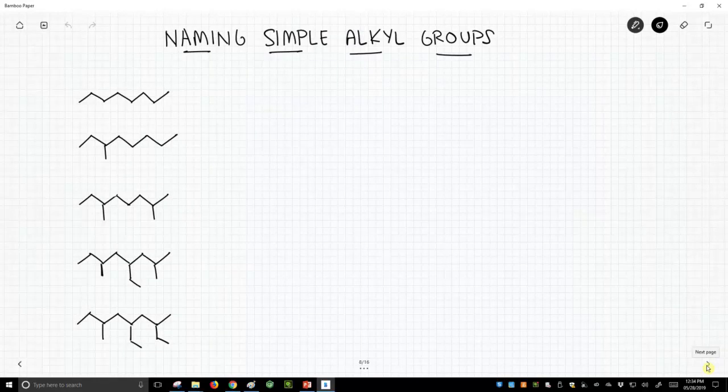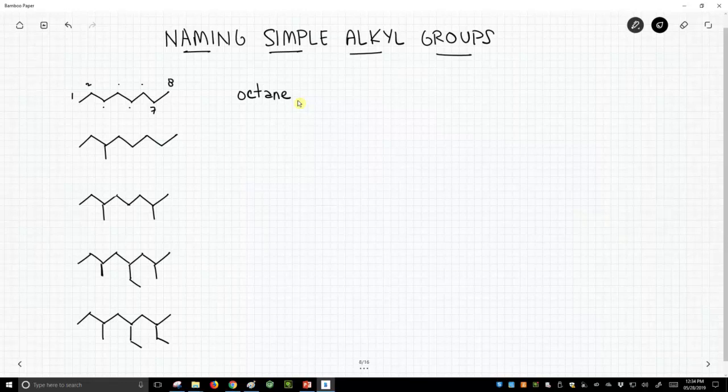We're gonna start with a really simple structure. This is an 8 carbon chain: one, two, three, four, five, six, seven, and eight. And so this is octane, simple octane. There are really no functional groups to incorporate because it's just a simple hydrocarbon chain.